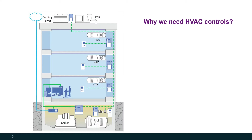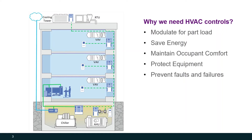Why do we need HVAC controls in the first place? Without HVAC controls, all of our HVAC equipment would be operating at full load all the time. By putting in automatic DDC controls, we can now modulate our equipment for part load. This saves energy and does a better job at maintaining occupant comfort throughout the building. We can also use HVAC controls to protect equipment, prevent faults and failures, and help inform maintenance staff when HVAC equipment might not be working correctly.